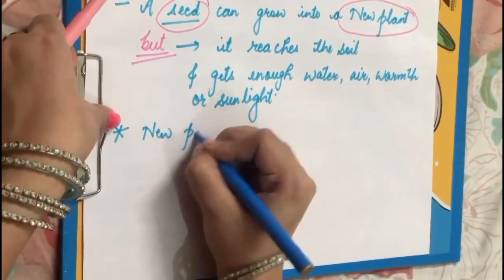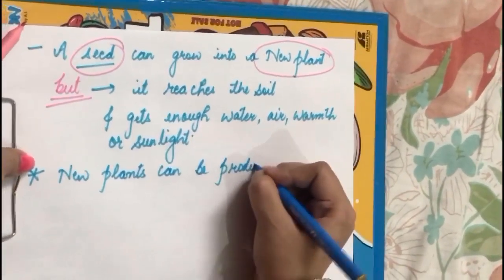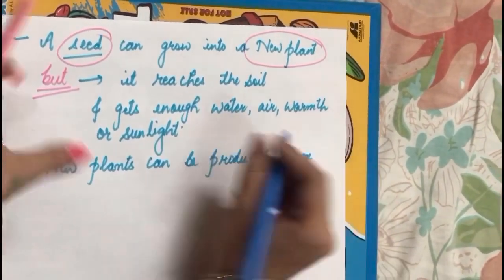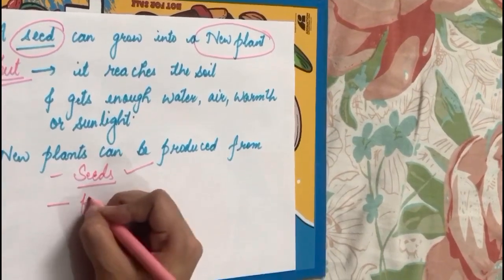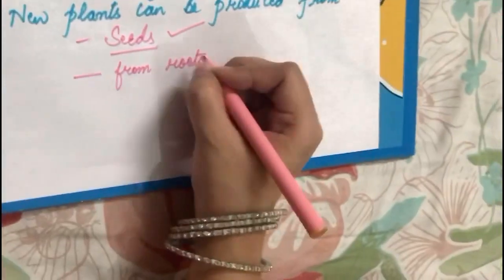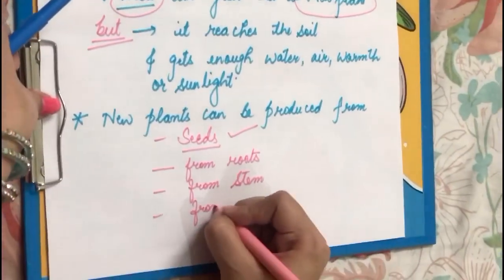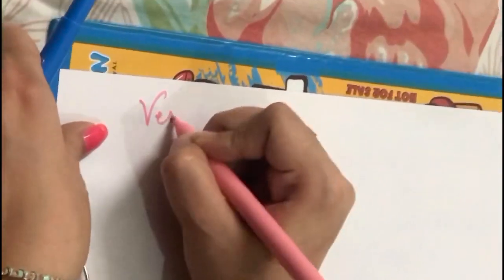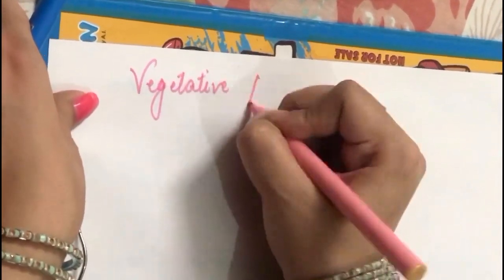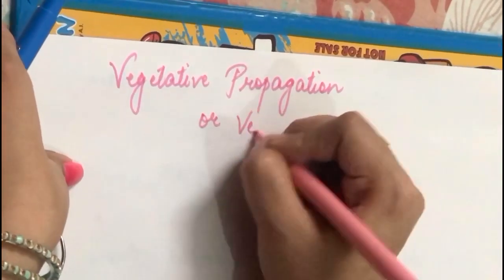New plants can be produced from seeds — this we have already done. Now we will be studying production from roots, from stem, and from leaves. Here comes one important term: Vegetative Propagation, also called Vegetative Reproduction.